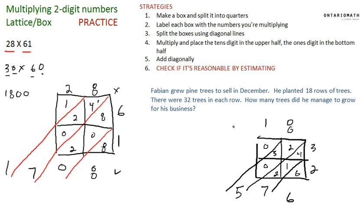The answer is 576. So Fabian grew 576 trees to sell for his business, his pine tree business. Rocking in the dough there, Fabian! Good luck on this, guys.